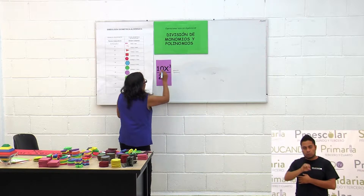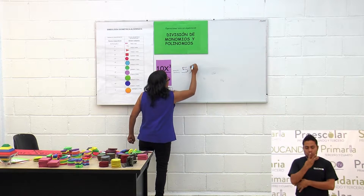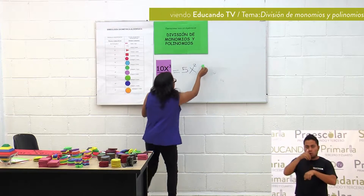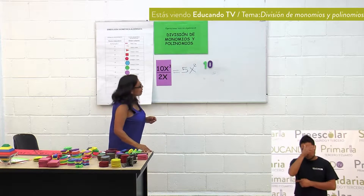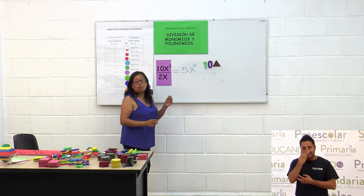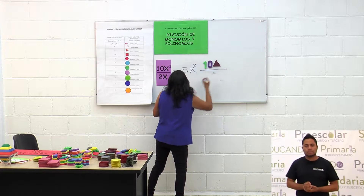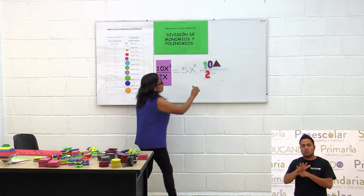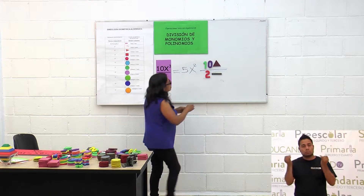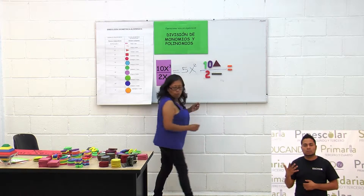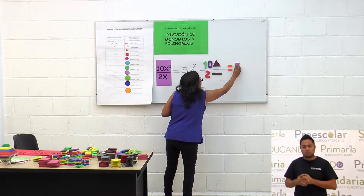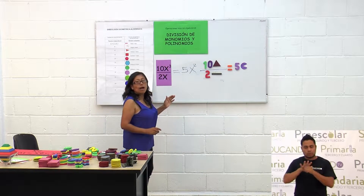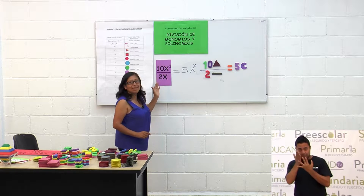Esto es igual a 10 entre 2, que es 5. X cúbica entre x es x cuadrada. Se adecua a la nueva metodología: ponemos el número 10. En lugar de x cúbica ponemos el triángulo, entre 2x, que sería el número 2 y la recta. Esto es igual a 5 ángulos, es decir, 5x cuadrada.